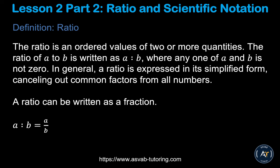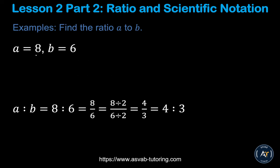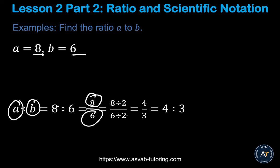A ratio is the same as a fraction — you are comparing numbers in a different way. You can write: a ratio b equals a over b. For example, if a equals 8 and b equals 6, then a ratio b is 8 ratio 6. Whatever is first goes on top as the numerator, and the right side becomes the denominator.